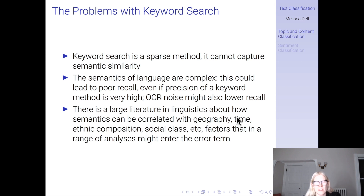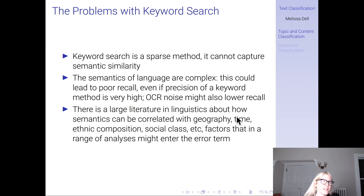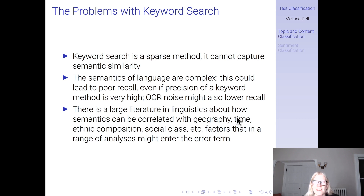Importantly, there's a large literature in linguistics about how semantics can be correlated with things like geography — people across space speak differently — time, as language changes over time, ethnic composition, social class, etc. The way text is written is correlated with a lot of other factors, and there could easily be contexts where that enters the error term, which would bias downstream analyses.